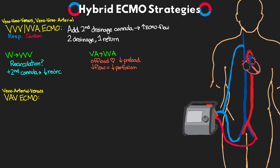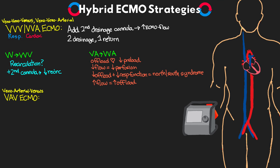If we have insufficient offloading and the heart continues to pump blood forward, this won't be a problem as long as the lungs continue to work. But if we see decreasing respiratory function and the heart isn't being offloaded enough, we'll begin to see north-south syndrome — where deoxygenated blood from the patient's heart meets the retrograde flow from the ECMO circuit, forming a mixing cloud. If that mixing cloud moves far enough along the aorta, it puts perfusion of the heart, upper body, and head at risk. By adding the second drainage cannula we achieve higher flows, leading to more offloading of the heart by decreasing preload, preventing less-oxygenated blood from perfusing the upper body, coronaries, and head.